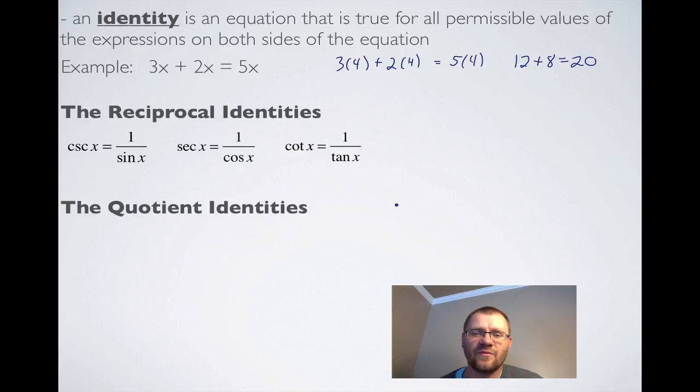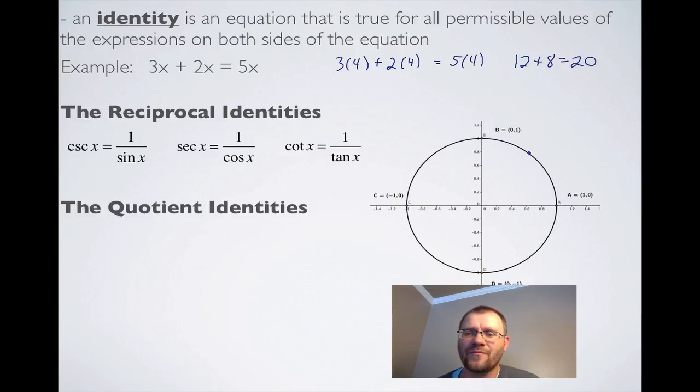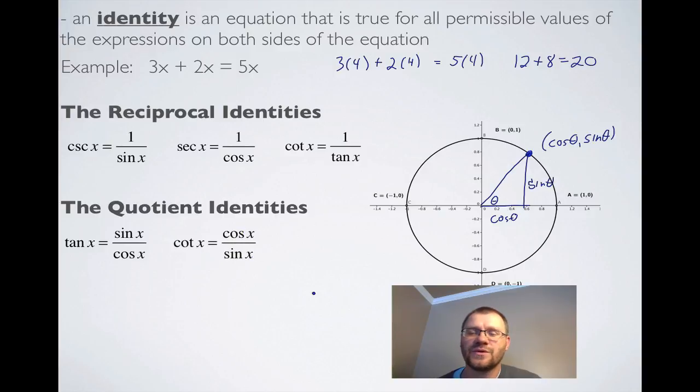The quotient identities we're going to find by using the unit circle. We said any point on the unit circle had the coordinates cosine comma sine. That was from unit 4. We know that this makes a right triangle, which means that the horizontal side is cosine and the vertical side is sine, and this is our angle. The first quotient identity is just saying tangent of this angle is opposite side over the adjacent side, so tan is sine over cos. Then, using this concept, cotangent is the reciprocal of tan, so if tan is sine over cos, then cotangent is cos over sine.